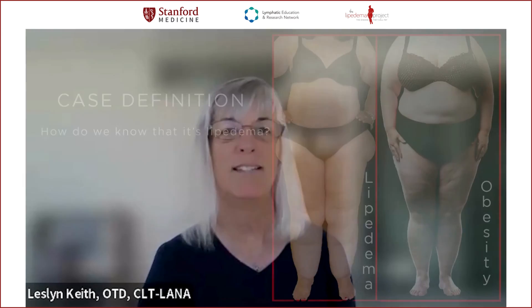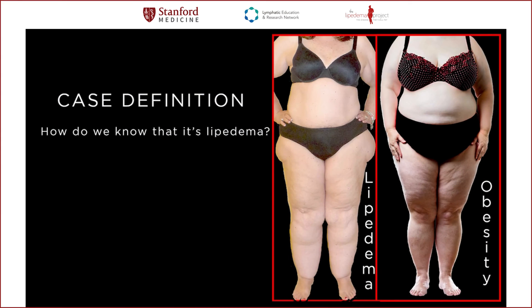Before starting, we should clarify: what is a case definition? A case definition describes the necessary components to define a disease as such for research purposes. Essentially, a case definition should answer the question: how do we know an individual is suitable for participation in a study on lipedema, and how do we know when someone isn't? In other words, how do we decide we are confident that someone has lipedema and should be studied as someone with the disease?